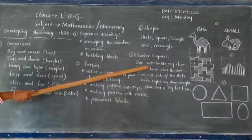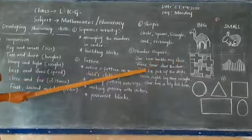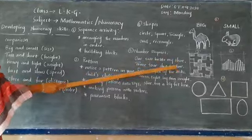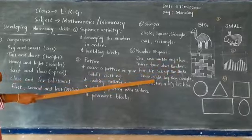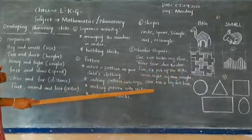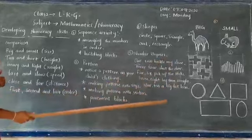Like, 1, 2, buckle my shoe. 3, 4, shut the door. 5, 6, pick up the sticks. 7, 8, lay them straight. 9, 10, a big fat hen.